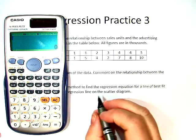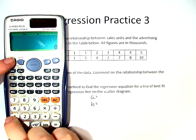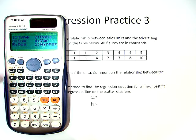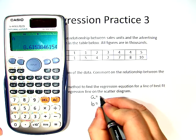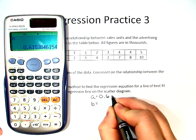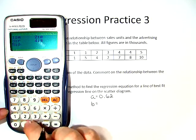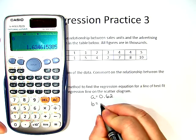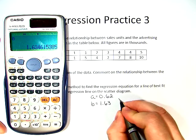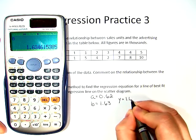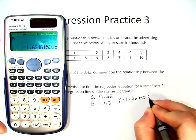And now we need to find our A and our B. So we do Shift 1 and we go into Regression and choose A. And we get 0.62. Okay, let's do the same for B. And we get 1.63. So our equation is Y equals 1.63X plus 0.62.